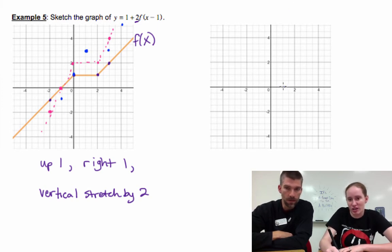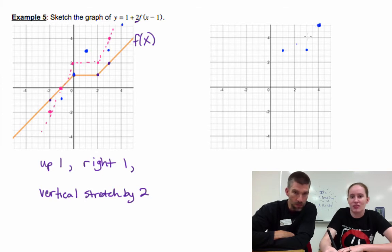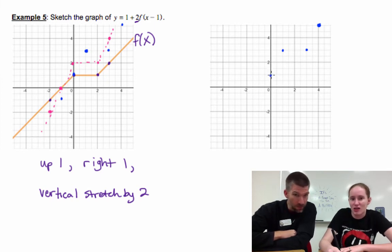You should kind of be able to see what that graph looks like. If I move it over to my new graph, I've got the point one comma three right here, three comma three right here, zero one, and negative one negative one.